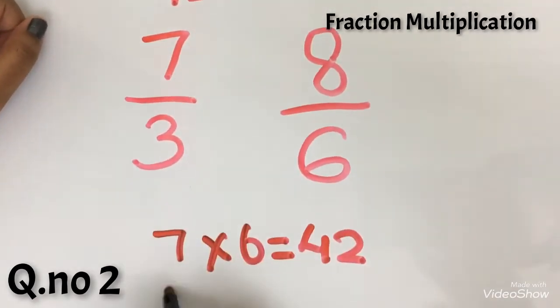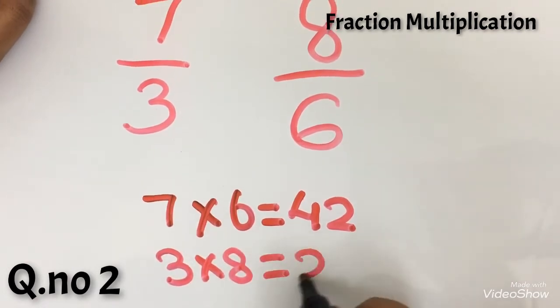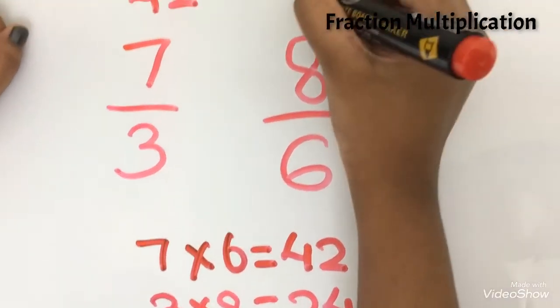And 3 into 8. 3 into 8 equals 24. I am going to write it over here.